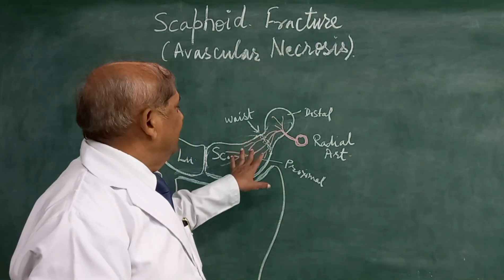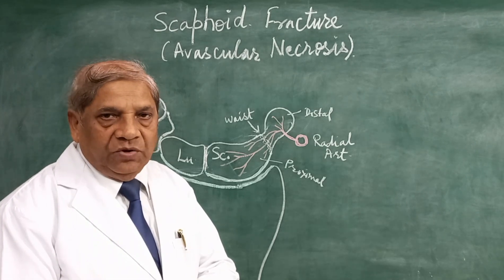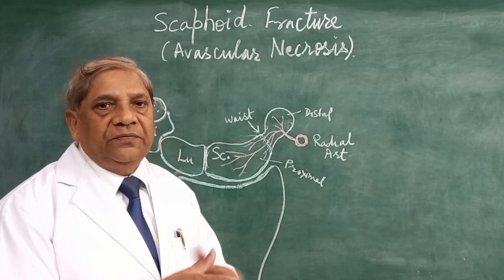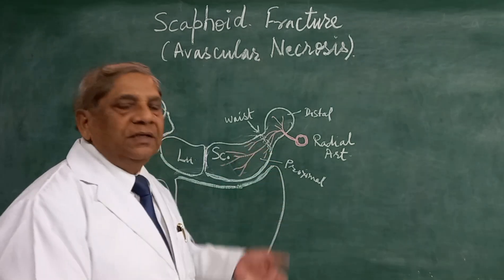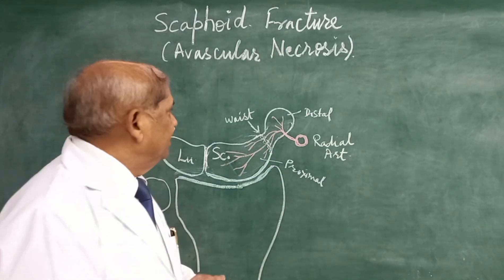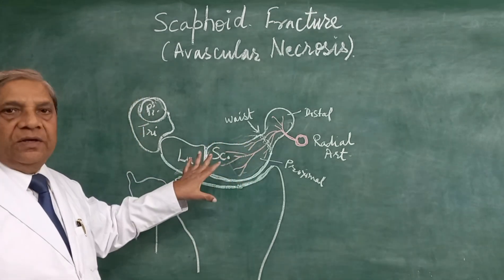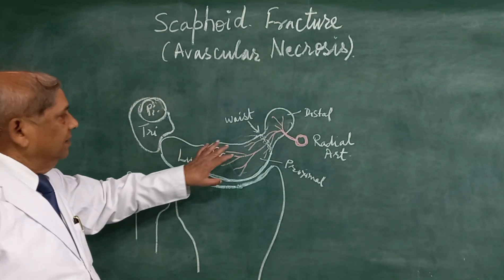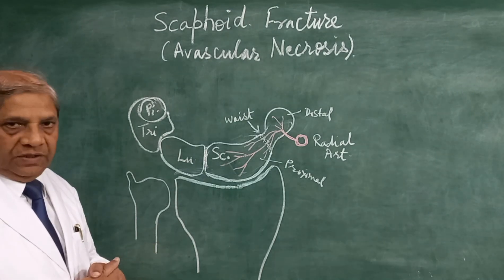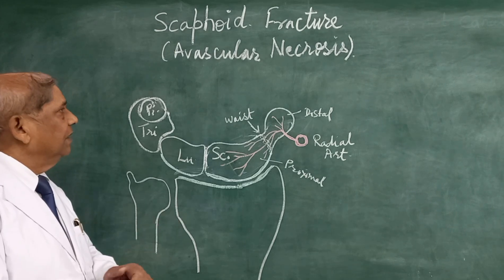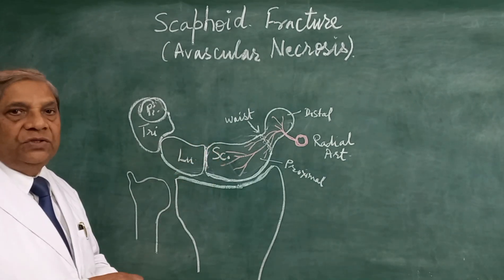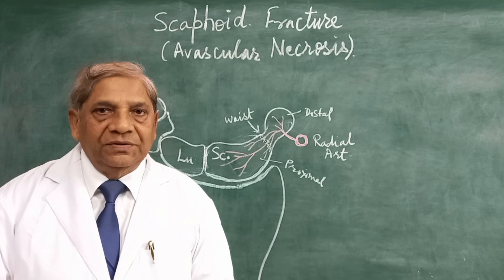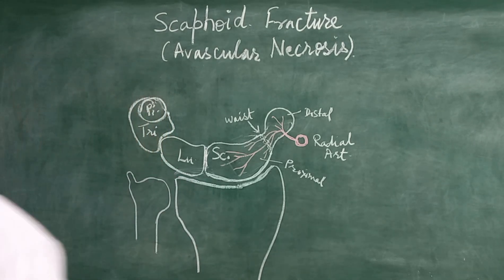This is called avascular necrosis of the scaphoid bone, which is very common because young people often fall while playing. At that time, there is a fracture of the scaphoid bone due to the disruption of blood supply. This is the scaphoid fracture. Thank you for watching this video — it is important because avascular necrosis of the scaphoid is very commonly asked as a short-answer question.